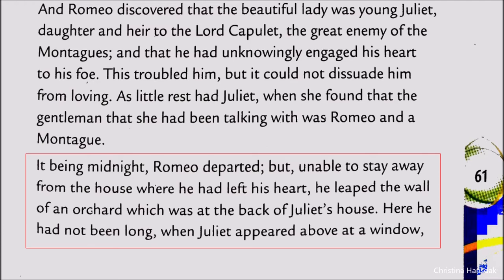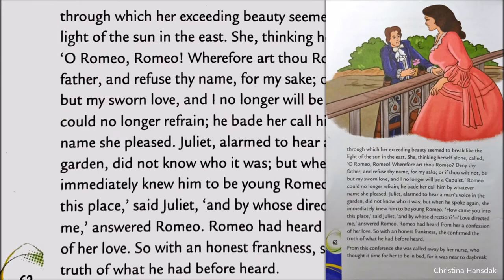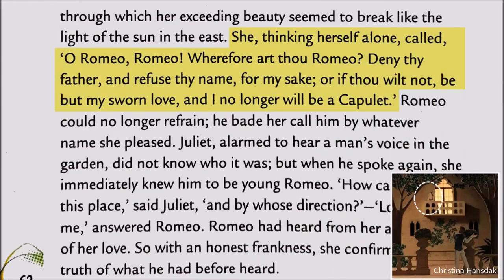Why? Because he had left his heart there. So he climbed the wall of an orchard at the back of Juliet's house, and there he viewed Juliet at the window. She was lost in herself, as if her heart was calling Romeo, seeking Romeo, and wishing to be with Romeo.